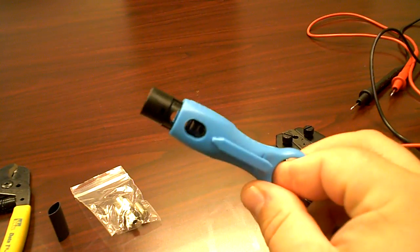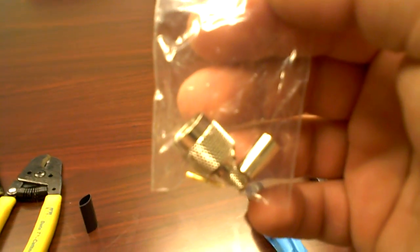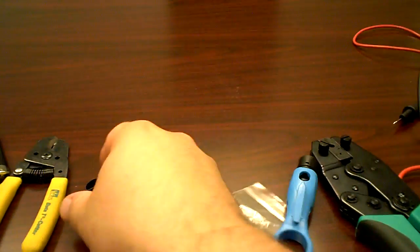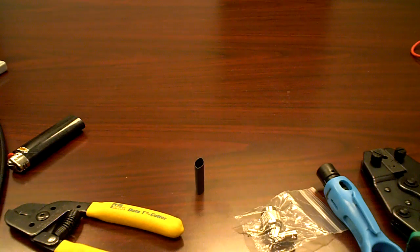LMR240 strip tool for stripping your cable back. LMR240 crimp connector. Heat shrink which we use to seal the connection on the connector. And a center pair of cutters.